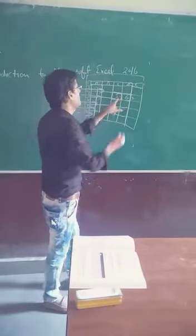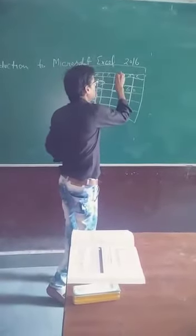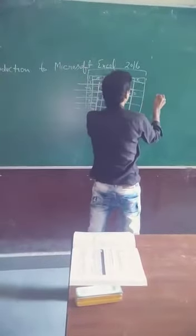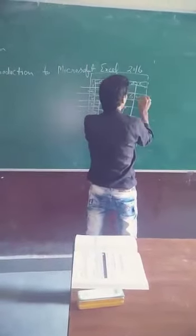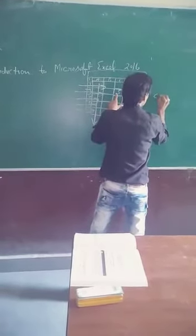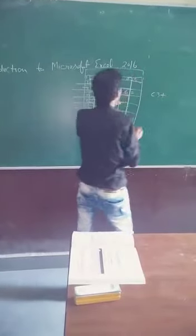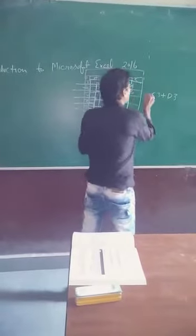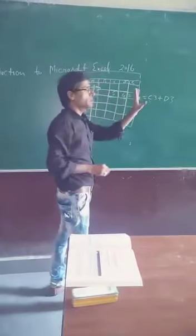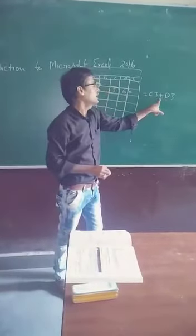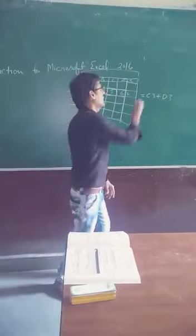So 5 is available in C column and third row. So we can give the formula C3 plus D3. We can add the address of the cell, C3 plus D3, and just press enter and the result will be 11 here.